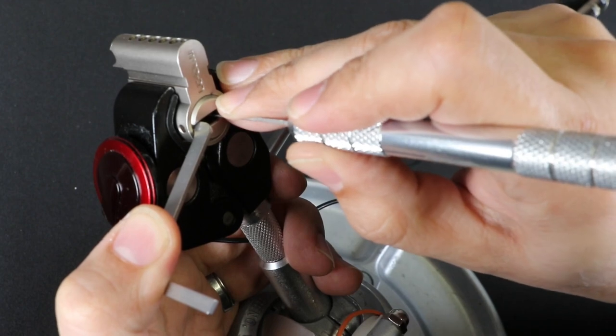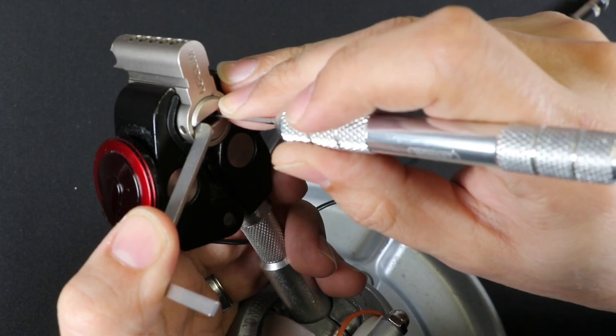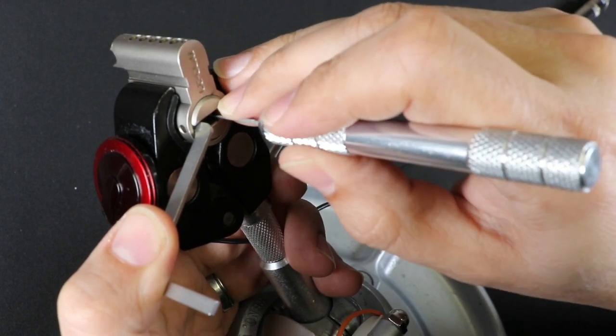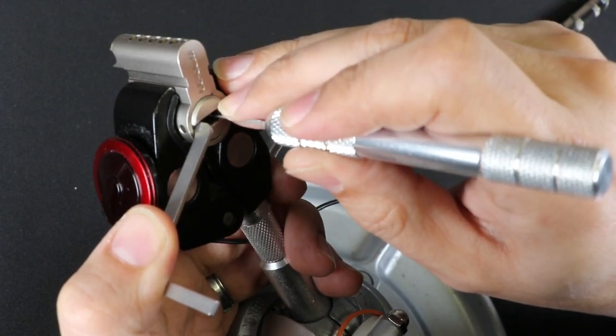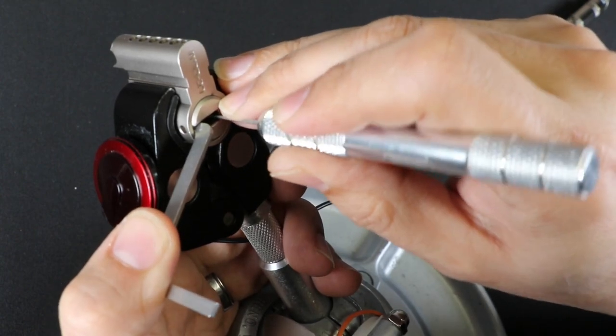Alright, pin three is now binding. There we got a click, so I got counter-rotation on that one, that's got to be a spool. And pin five is binding hard. Counter-rotation, click out of that. So that's got to be a spool.